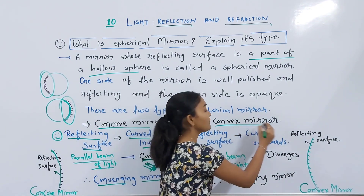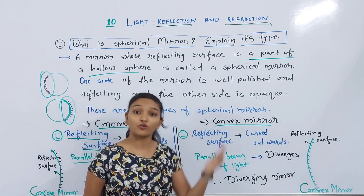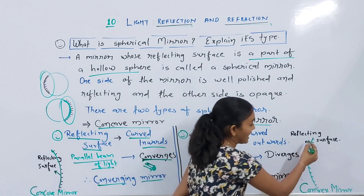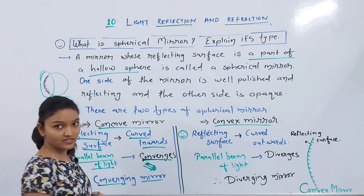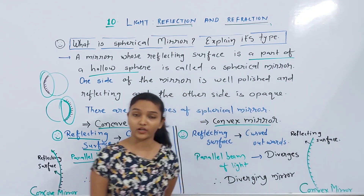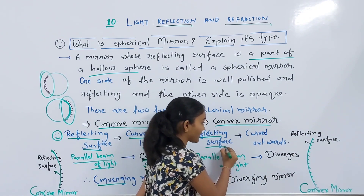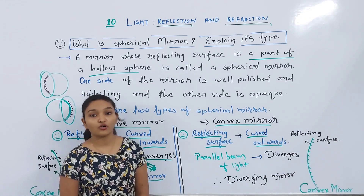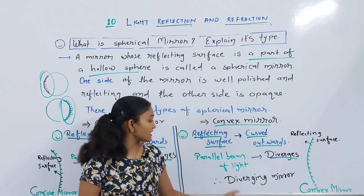A spherical mirror with a reflecting surface curved outwards is called a convex mirror. In a convex mirror, the outward surface is the reflecting surface and the inner side is opaque. When a parallel beam of light diverges after reflection from such a mirror, it is known as a diverging mirror.